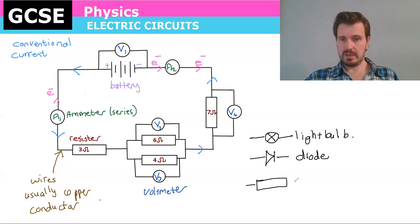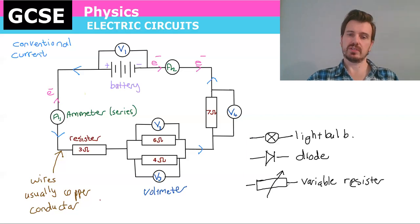A resistor with a line through it like this is called a rheostat or variable resistor. And this means you can change the resistance. So while all of these other resistors, the 3 ohm, 6 ohm, 4 ohm, 7 ohm are fixed, this variable resistor can change so you can adjust the resistance.